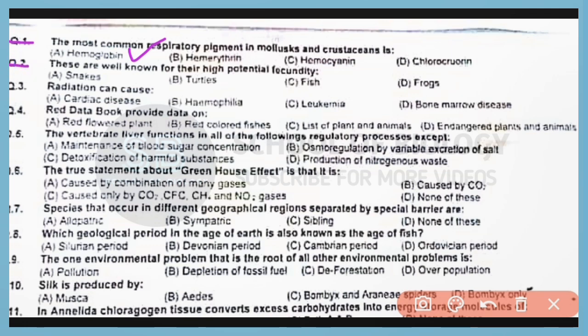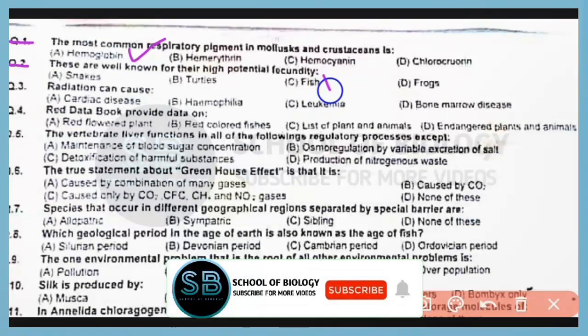Question number 2. These are well known for their high potential fecundity. Correct answer is option C. Fishes have high fecundity potential.